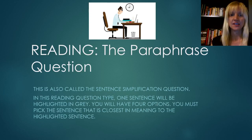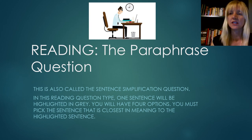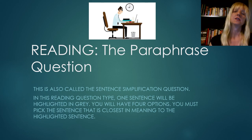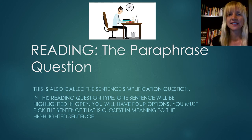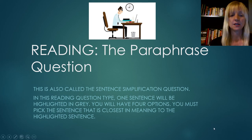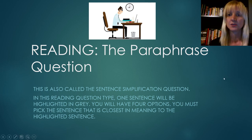Hello, this is Kathy from House of TOEFL, and today we're going to be discussing the paraphrase question in the reading section of the TOEFL IBT. This is also called the sentence simplification question in some books. In this reading question type, one sentence will be highlighted in gray, and you will have to choose from four options. You must choose the sentence that is closest in meaning to the highlighted sentence while avoiding some traps, and one of my goals today is to show you what those traps are.